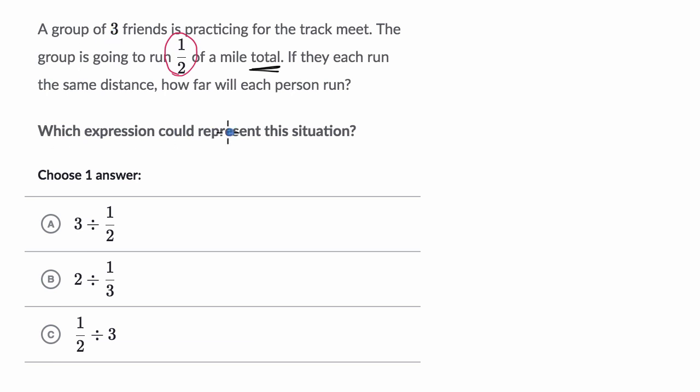So an expression that represents this is one half, the total distance they are running, divided by the number of people who are going to split that distance, divided by three. And so that is choice C right over here.